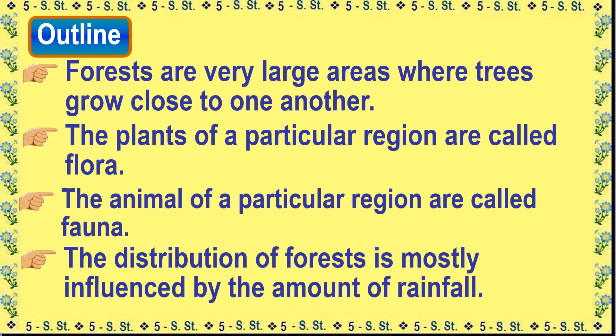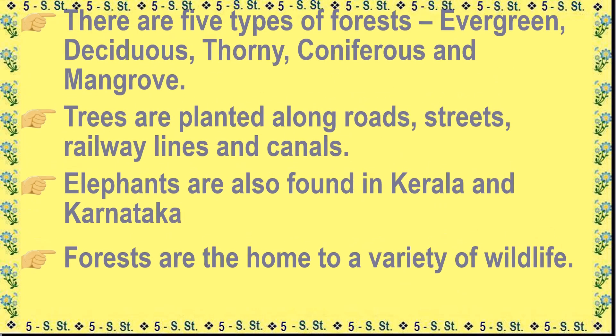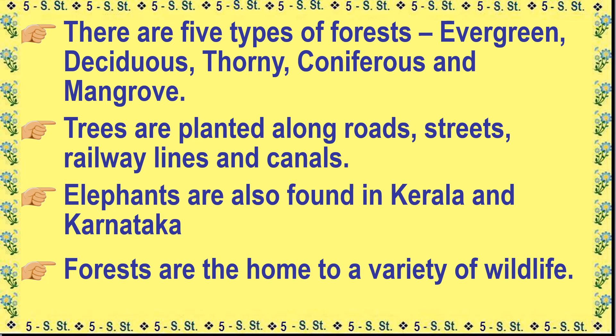Outline: Forests are very large areas where trees grow close to one another. The plants of a particular region are called flora, and the animals are called fauna. The distribution of forests is mostly influenced by the amount of rainfall. There are five types of forests: evergreen, deciduous, thorny, coniferous and mangrove. Trees are planted along roads, streets, railway lines and canals. Forests are the home to a variety of wildlife.